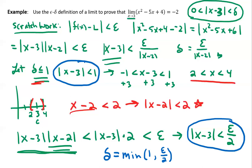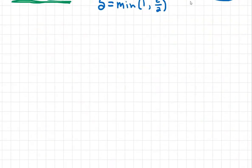We're going to let delta equal the minimum of 1 and epsilon over 2 — whichever one's smaller, that's the one we choose. If someone says they want epsilon to be 10, then epsilon over 2 is 5, so we choose delta equals 1. If epsilon is 1, then epsilon over 2 is one half, and we choose delta equals one half. We're choosing delta differently here, as a minimum between two choices. Now let's get to the actual formal proof — that was just scratch work.